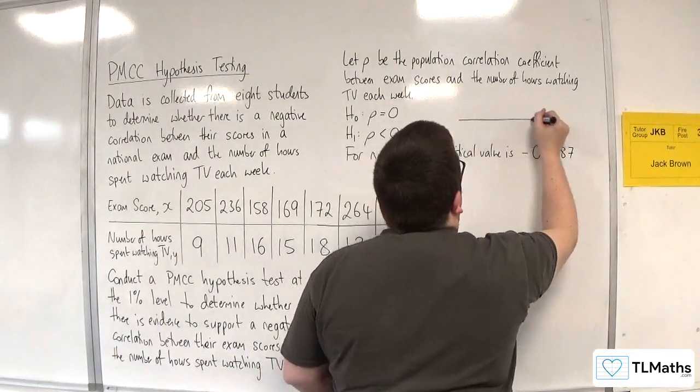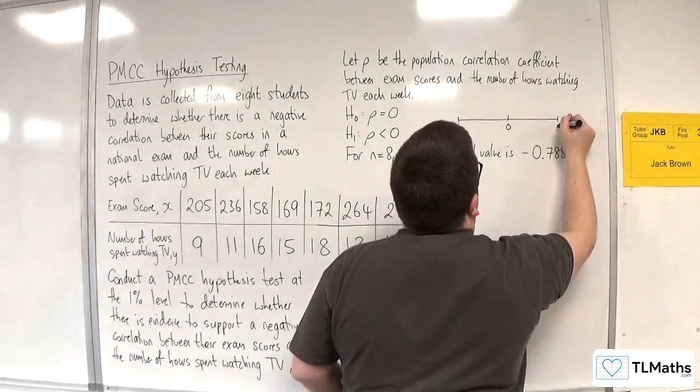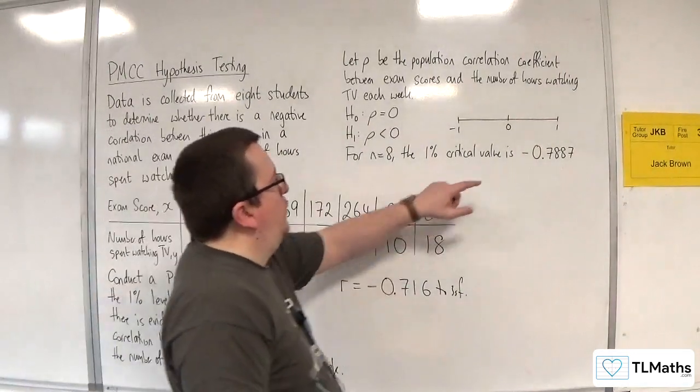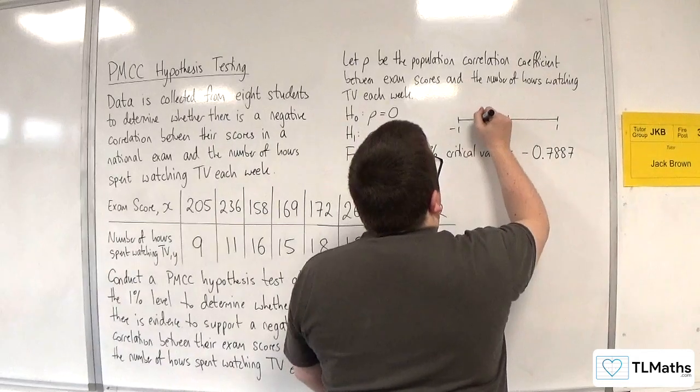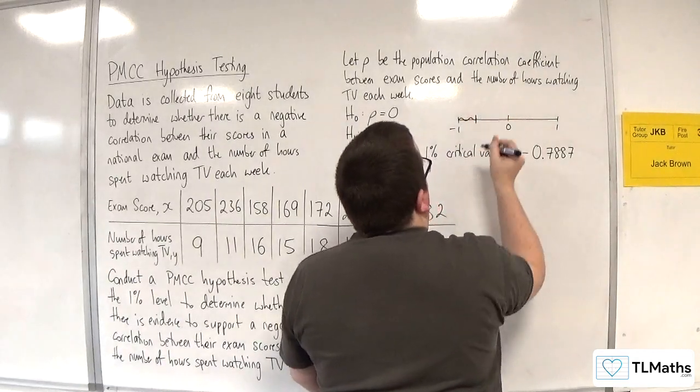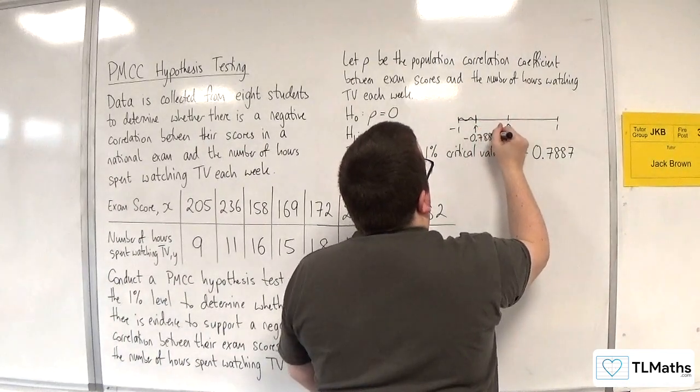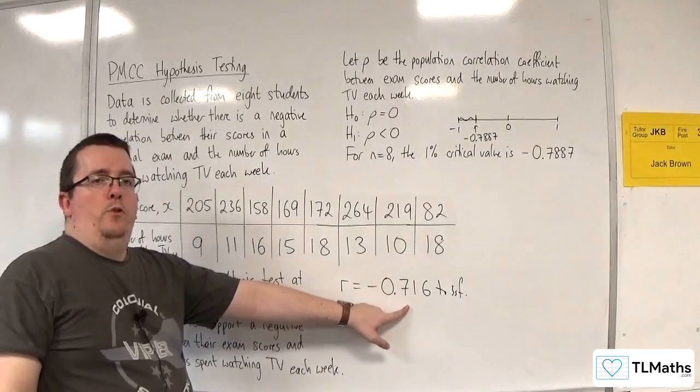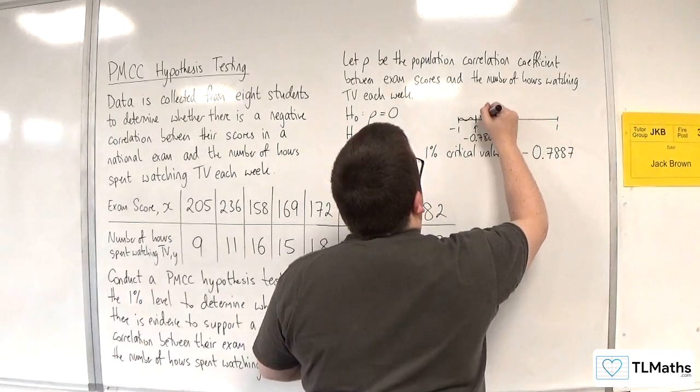Now, you can draw a number line to help you here. If it's tricky, draw a picky. And if the critical value is minus 0.7887, that's somewhere down here, for that to be my critical region. So minus 0.7887. And my R value is minus 0.716, which is somewhere about here.